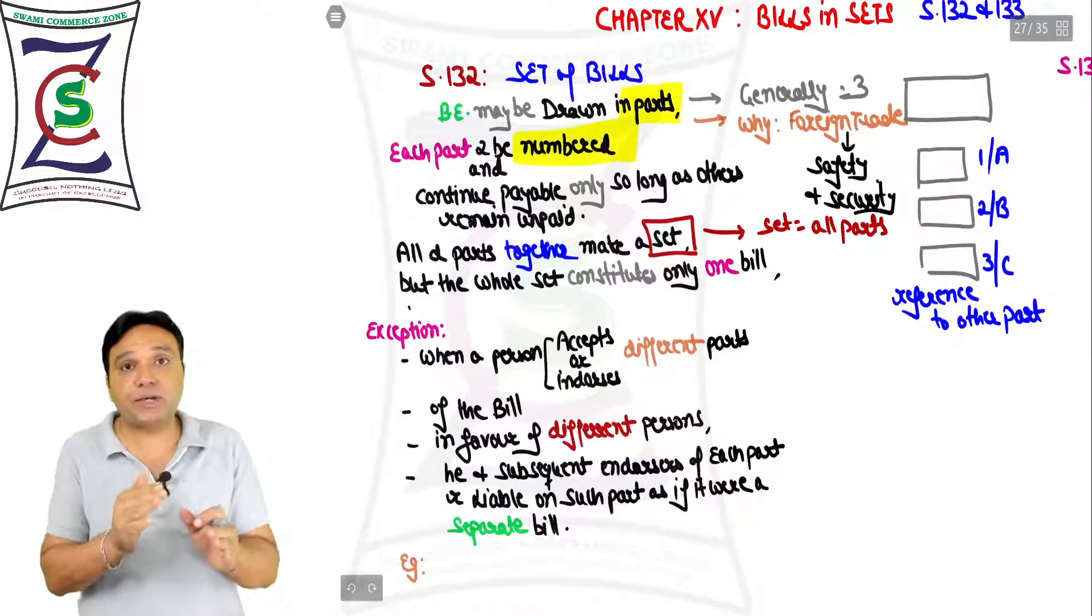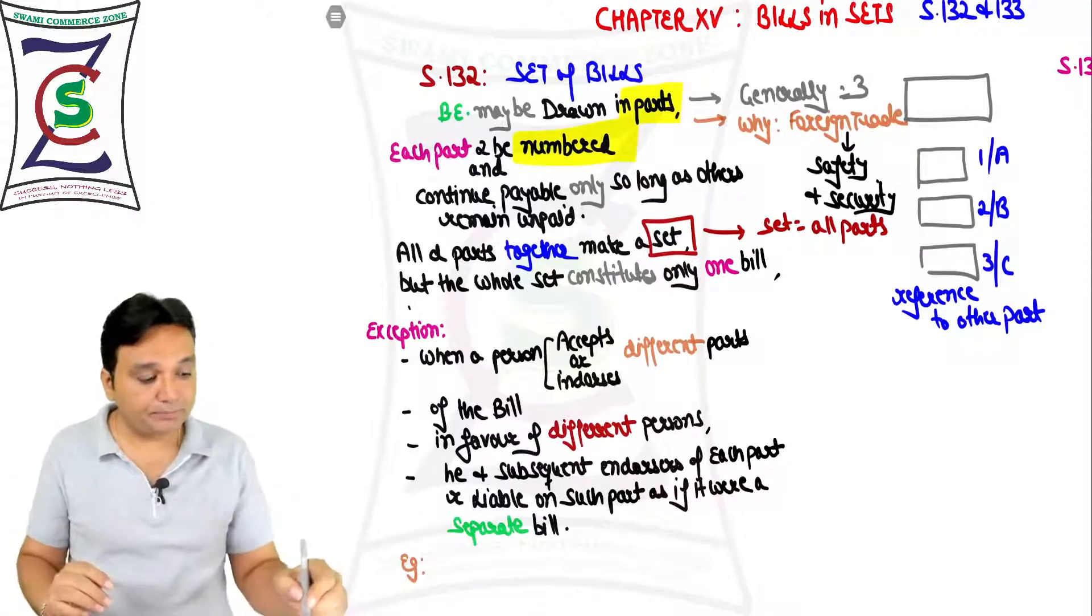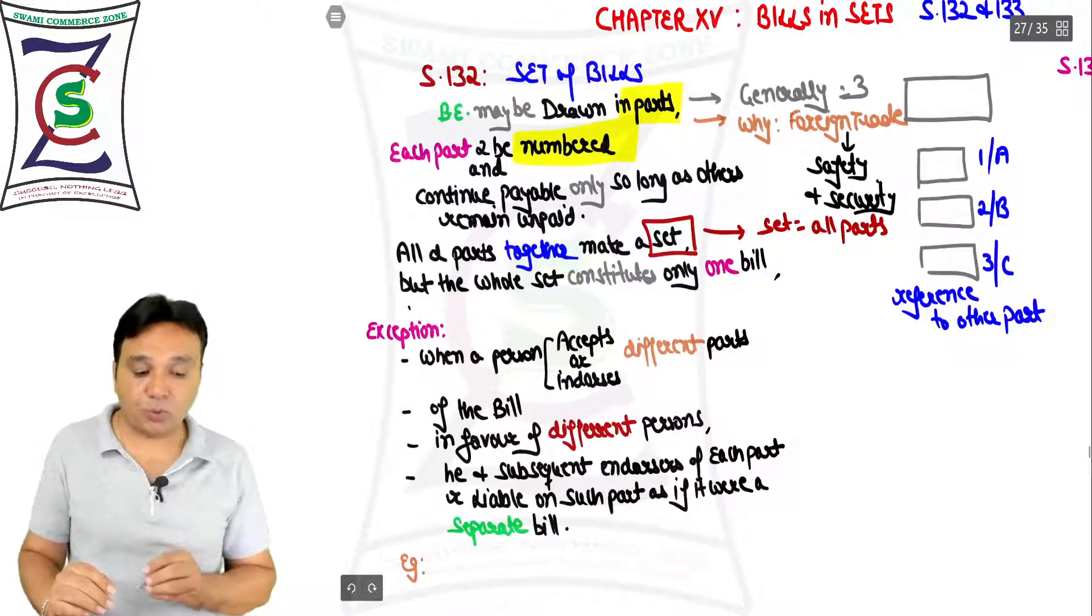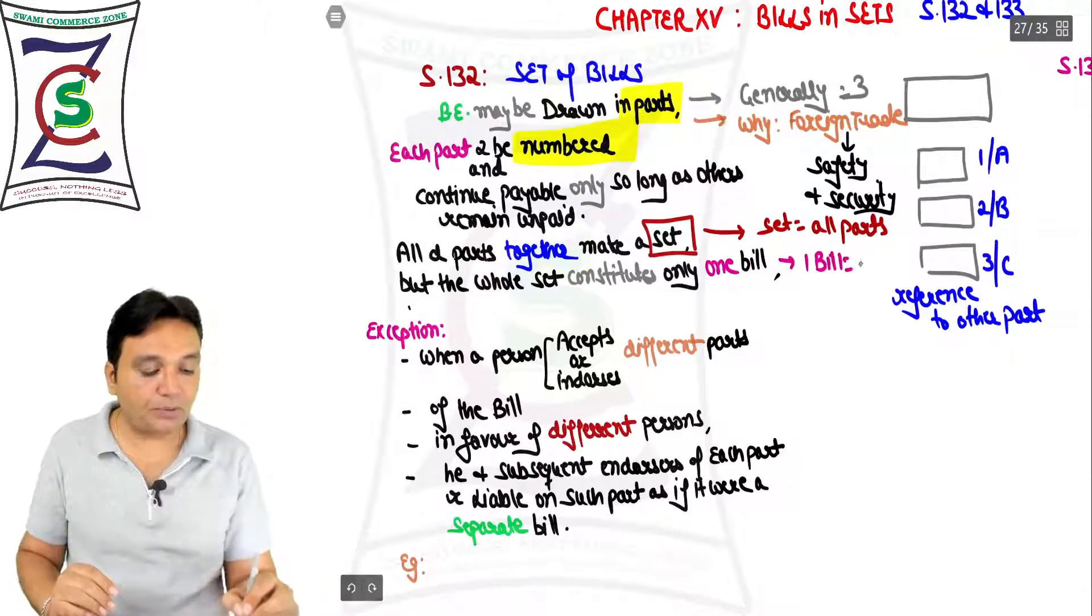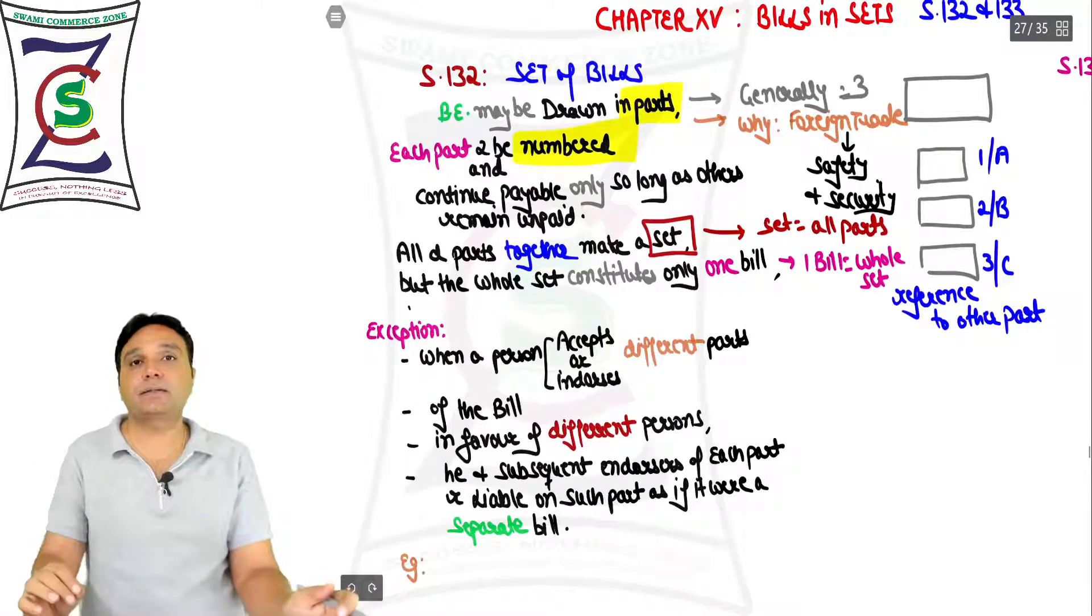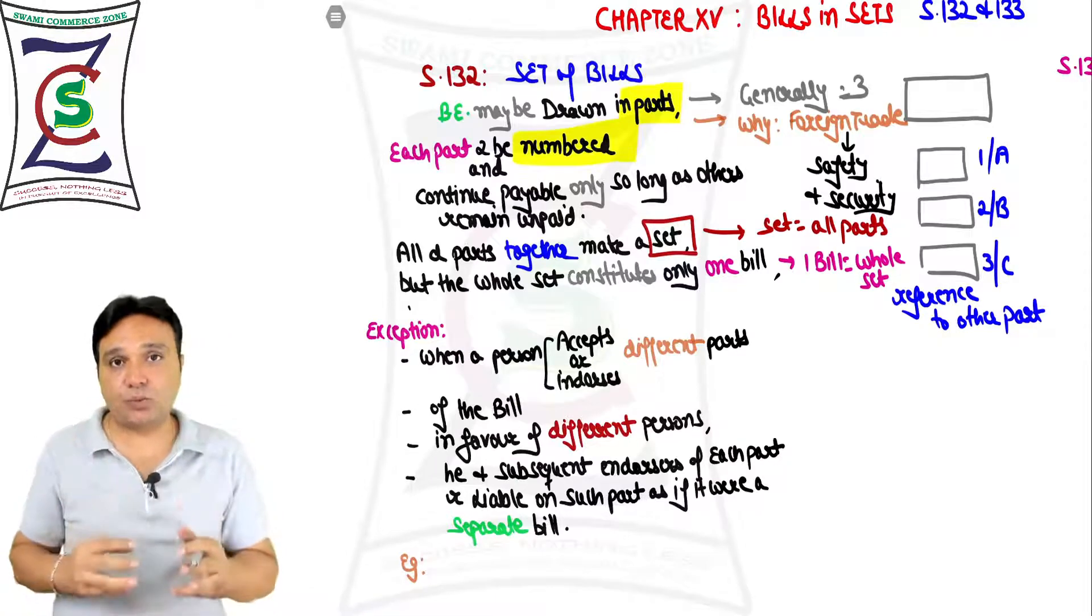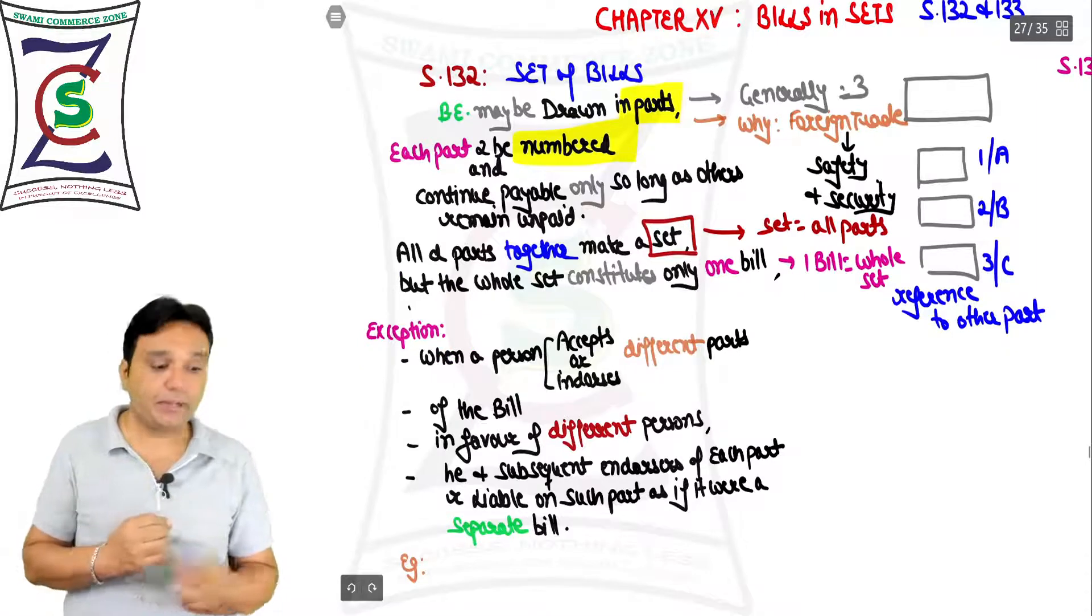We got set equals all parts. What is set? Joining all the parts. But the whole set constitutes only one bill. Whole set - that means one bill equals whole set. And what is whole set? All the parts. You join all the parts and you get one bill. Joining all the parts termed as set, and the whole set is termed as one bill.